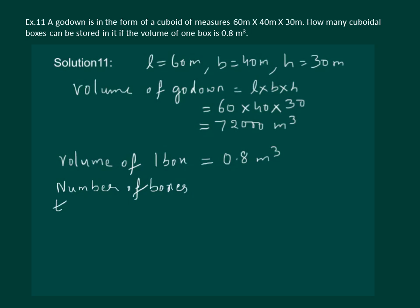Number of boxes that godown can hold is equal to 72,000, that is the volume of the godown, divided by volume of one box. Let us solve this further and get 90,000.